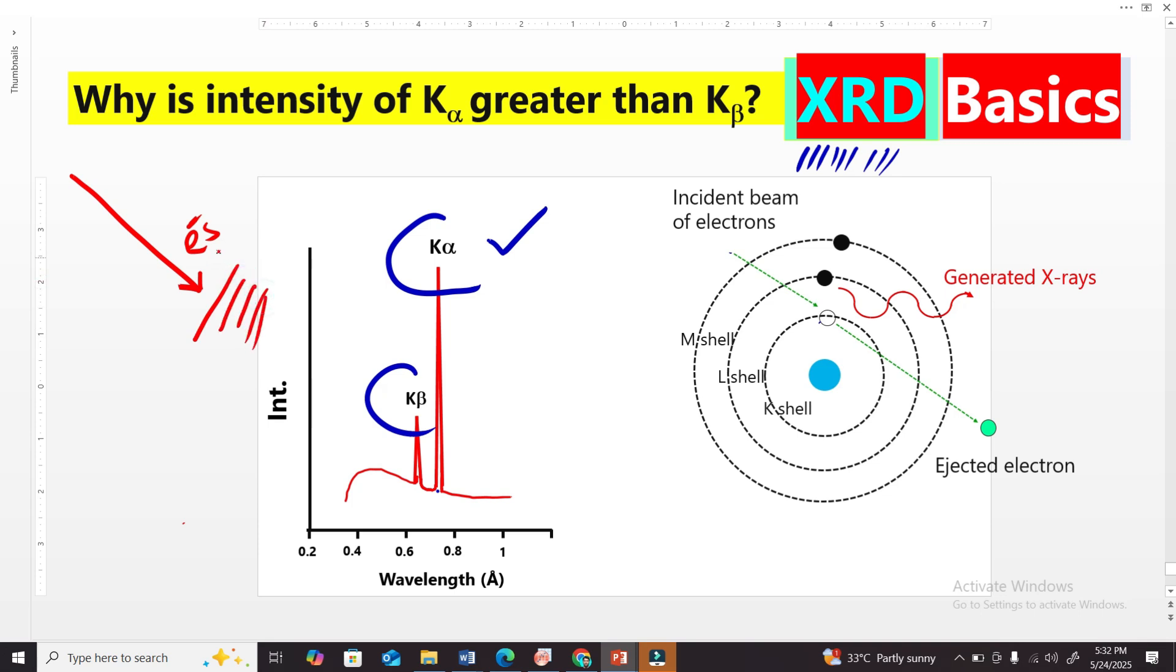these electrons are basically losing their energy. These electrons are decelerating, and we know that these electrons have only kinetic energy, and we know kinetic energy is equal to half m-v-squared. This loss in kinetic energy is basically converted into another form of energy in the form of photons, and those photons are basically called X-rays.